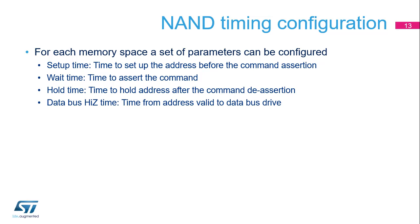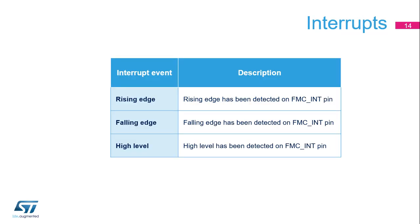Four parameters define the number of clock cycles for the different phases of any NAND Flash access: setup time, wait time, hold time, and data bus high-Z time. The NAND controller offers three interrupt sources — rising edge, falling edge, and high-level detection on the FMC INT pin — when it is connected to the ready/busy signal from the NAND Flash memory.